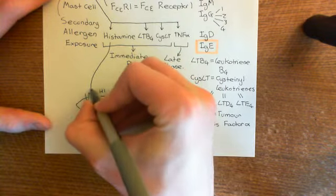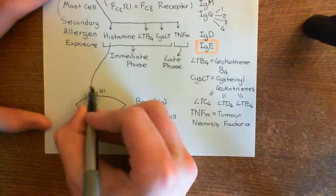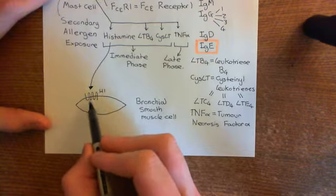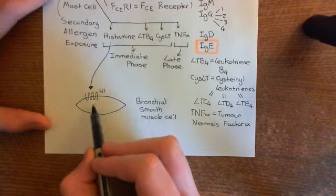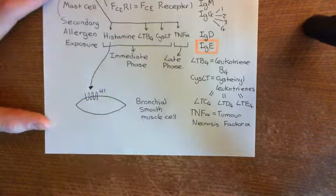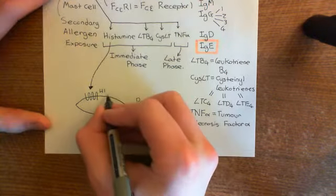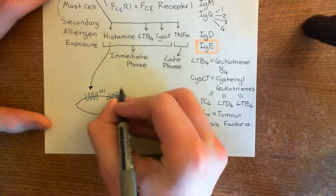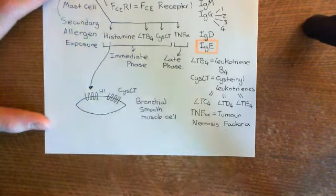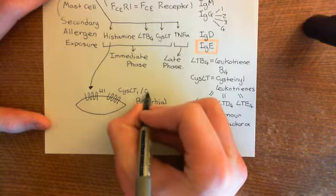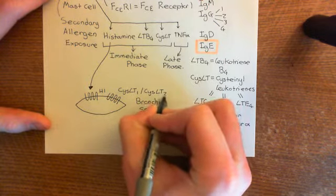Histamine diffuses back and acts on H1 receptors — the first type of histamine receptor — on the surface of these bronchial smooth muscle cells. The H1 receptor is a GQ-coupled receptor, a seven-transmembrane receptor coupled to a GQ heterotrimeric G protein. Also on the surface of bronchial smooth muscle cells are cysteinyl leukotriene receptors: cysteinyl leukotriene receptor 1 and cysteinyl leukotriene receptor 2. Both are GQ-coupled.